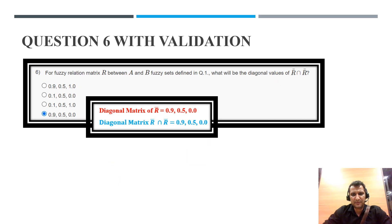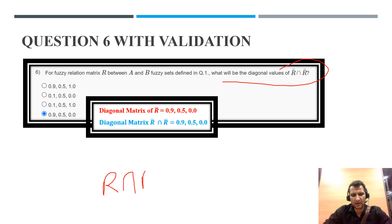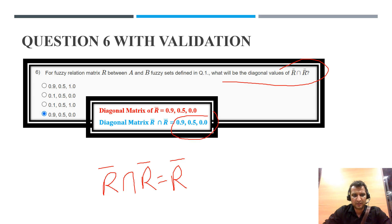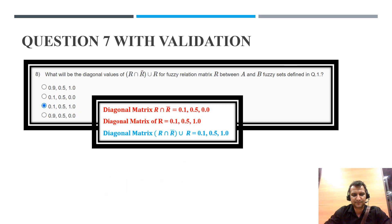Question 6: what will be the diagonal value of R intersection R? The same property holds — R intersection R is always equal to R. And if we take the complement, the complement of R complement intersection R complement will equal R complement. So the same answer applies: 0.9, 0.5, 0. The correct answer is option C.